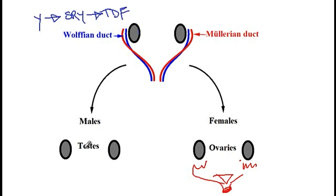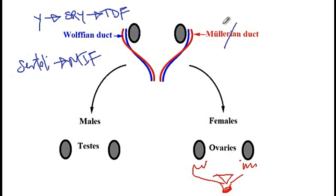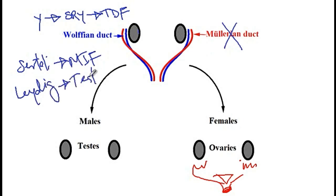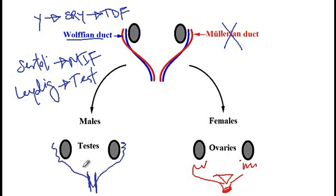There are two types of cells present in the testes. The first are Sertoli cells, which produce the Müllerian inhibiting factor that prevents development of the Müllerian duct. The other type are Leydig cells, which produce testosterone that acts on the Wolffian duct and helps it develop into the epididymis, vas deferens, and the seminal vesicles.